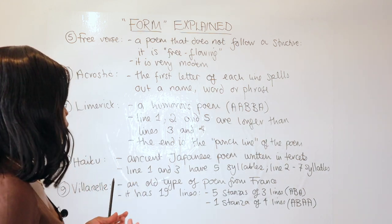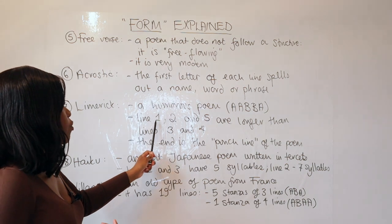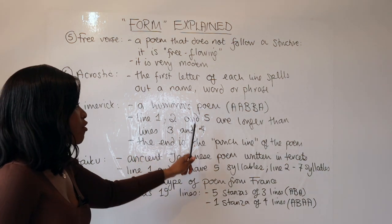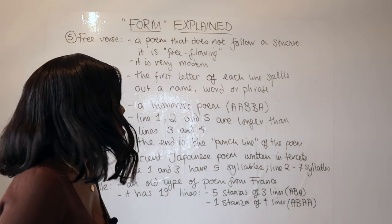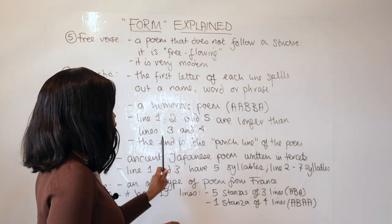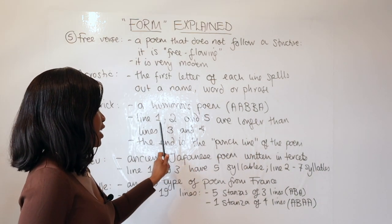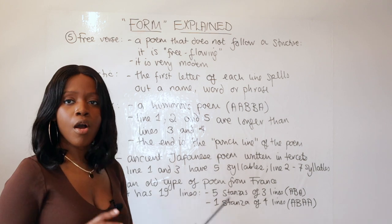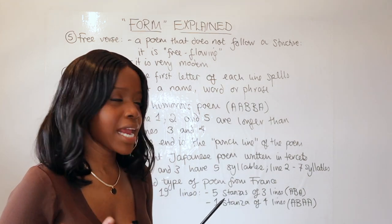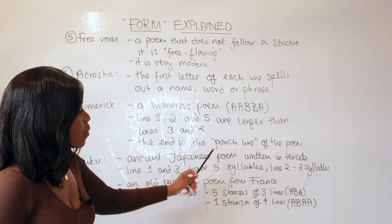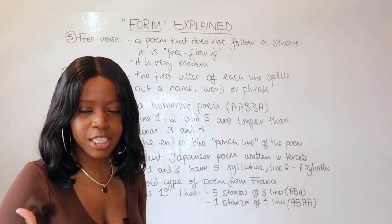Remember, within a limerick, lines one, two, and five within a stanza must be longer than lines three and four. So lines one, two, and five are much longer than lines three and four. And the end of the poem tends to be the funniest aspect of the poem—this is where we have the punchline.